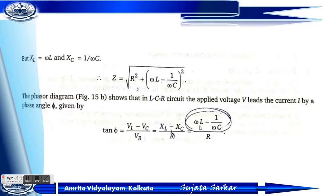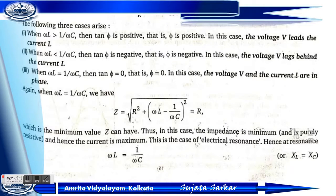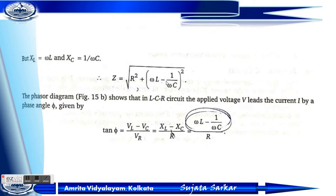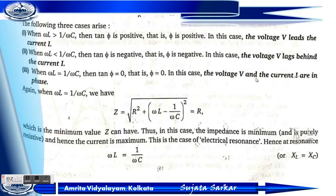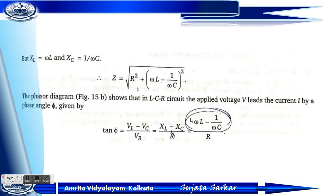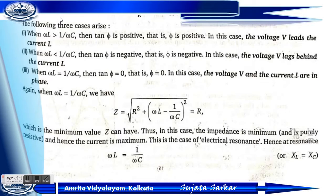Substituting XL equals omega L and XC equals 1 by omega C, we get tan phi equals (omega L minus 1 by omega C) divided by R. This equation follows three cases: if omega L is greater than 1 by omega C, then tan phi is positive and voltage V leads the current I. If omega L is less than 1 by omega C, then tan phi is negative and voltage lags behind the current. If omega L equals 1 by omega C, then tan phi equals zero.